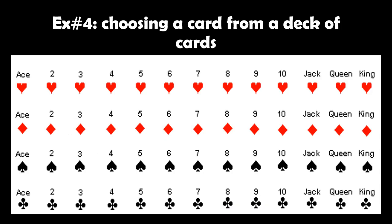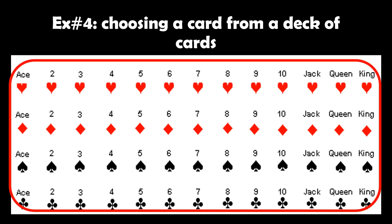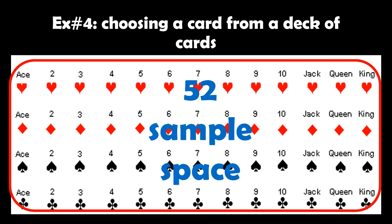Example number four: choosing a card from a deck of cards. A deck has hearts, diamonds, spades, and clubs — all from ace up to king. So the total number of cards, or sample space, is 52.